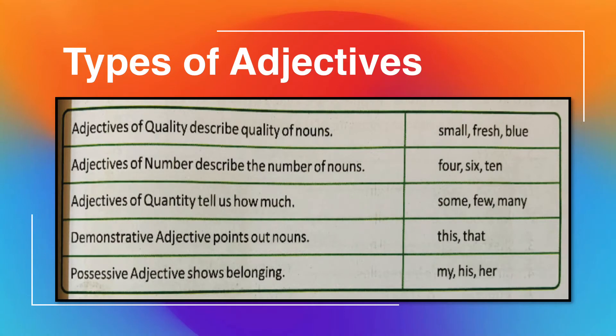Now, types of adjectives — there are many types. Here we will see a table. First is adjectives of quality, which describes the quality of a noun. Examples: small, fresh, blue — these describe something about the noun.